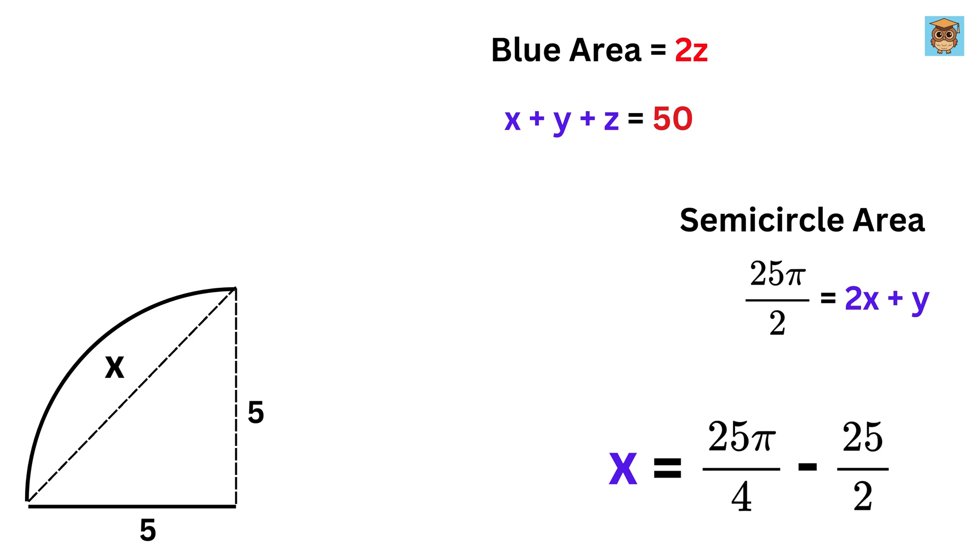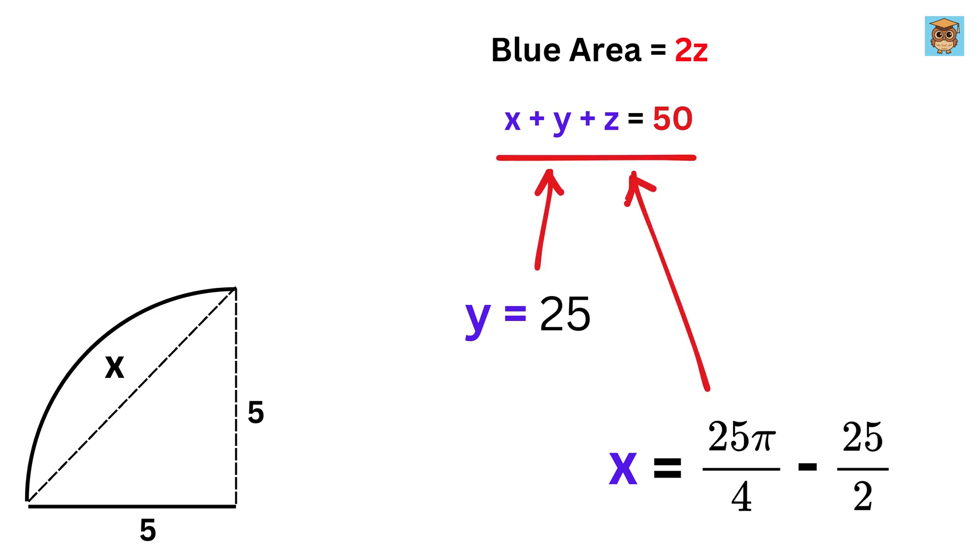Now, we substitute x into the previous equation to find y, which comes out to be 25. Finally, substitute x and y here to get z, as 75 over 2 minus 25 pi over 4.